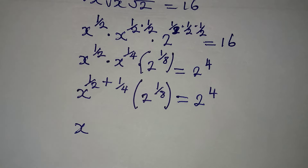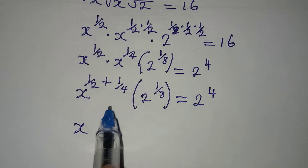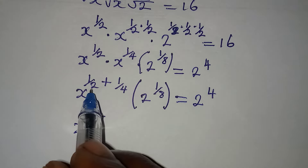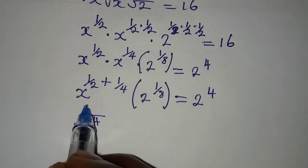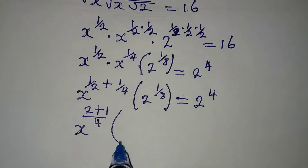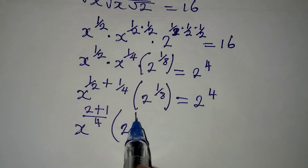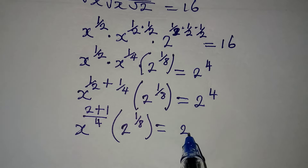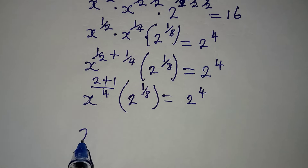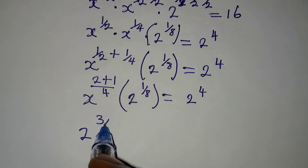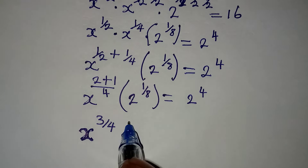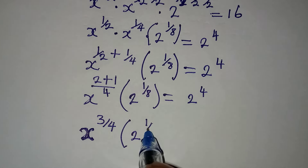Now we have x over here. Let's find the LCM of this power. The LCM is 4. Then 4 divided by 2 is 2 times 1 is 2, plus 4 divided by 4 is 1 times 1 is 1. I still have 2 to the power of 1 over 8, and everything is equal to 2 to the power of 4. This gives us x to the power of 3 over 4.